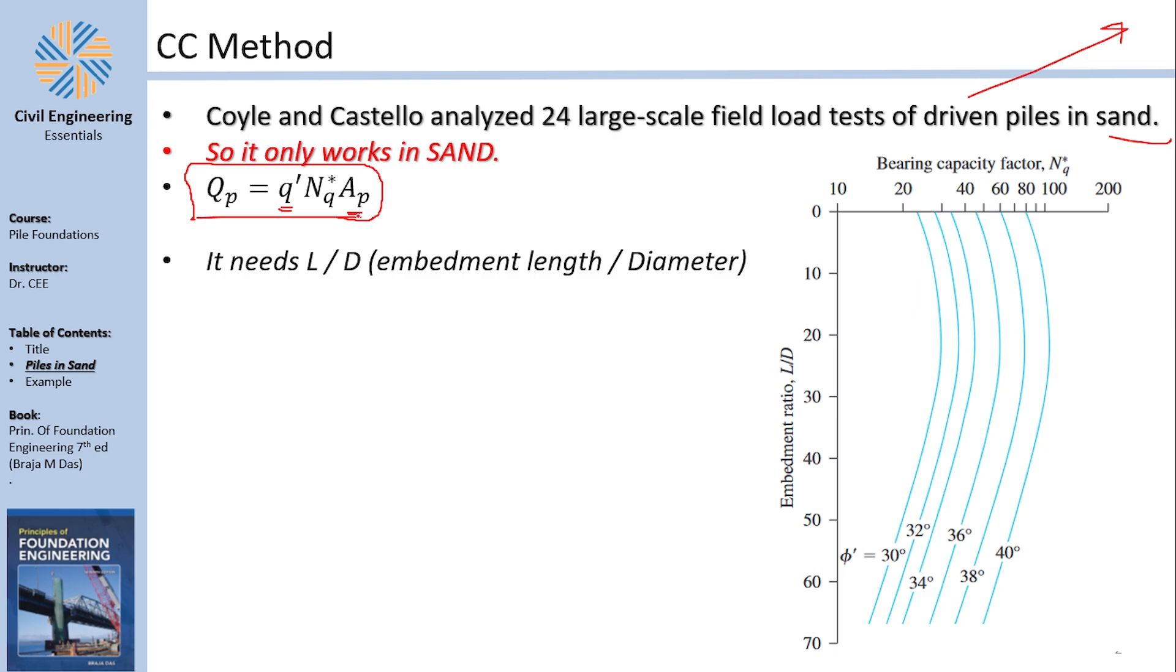AP is the area of the pile including the soil plug. Q is basically gamma multiplied by the embedment length, which is the stress of the soil above the embedment length. And NQ is some magic value—I keep calling them magic values but they are not. They are correlation values from a plethora of tests, and this NQ can be found from some charts.